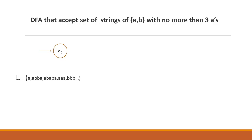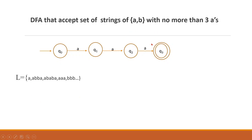Now let's go to Q0. From Q0, if we read an 'a', we go to Q1. From Q1, reading another 'a' we go to Q2. From Q2, reading another 'a' we go to Q3 - then we accept it. That accepts exactly 3 a's. In Q3, we accept b's as well. In Q0, Q1, Q2, and Q3, we accept b transitions staying in the same state.